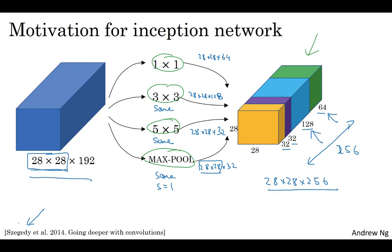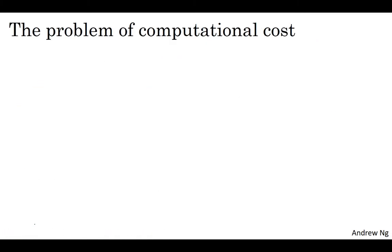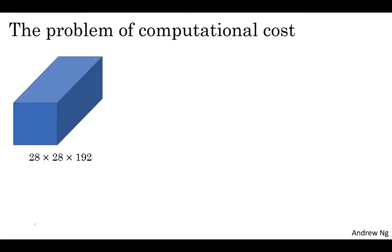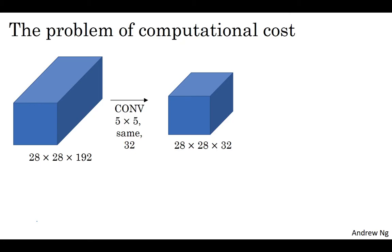Now, it turns out that there's a problem with the inception layer as we've described it here, which is computational cost. On the next slide, let's figure out what's the computational cost of this 5x5 filter resulting in this block. Just focusing on the 5x5 part of the previous slide, we had as input a 28 by 28 by 192 block.